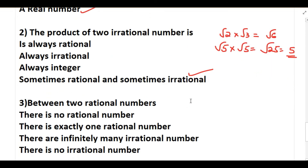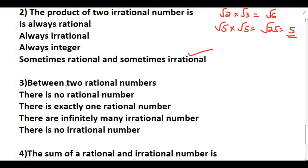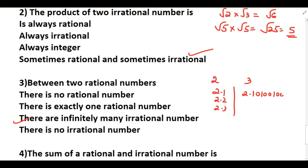Third question: between two rational numbers — there is no rational number, there is exactly one rational number, there are infinitely many irrational numbers, or there is no rational number. The answer is there are infinitely many irrational numbers. Between two rational numbers you can find infinitely many rational numbers as well as infinitely many irrational numbers. For example, between 2 and 3 I can find 2.1, 2.2, 2.3, 2.4 — infinitely many rational numbers.